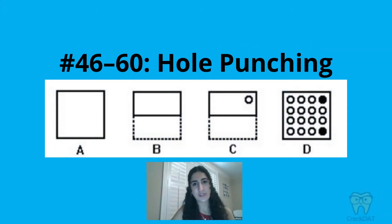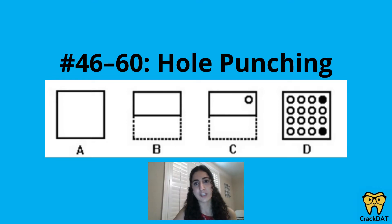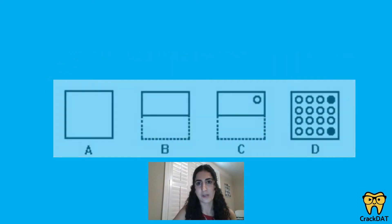Questions 46 through 60 are hole punching questions. A square piece of paper will be folded multiple times — vertically, horizontally, or diagonally, or a combination of all of those — then one or multiple holes will be punched in the paper, and then the paper will be unfolded. You'll need to figure out what the pattern of hole punches would look like on the unfolded paper.